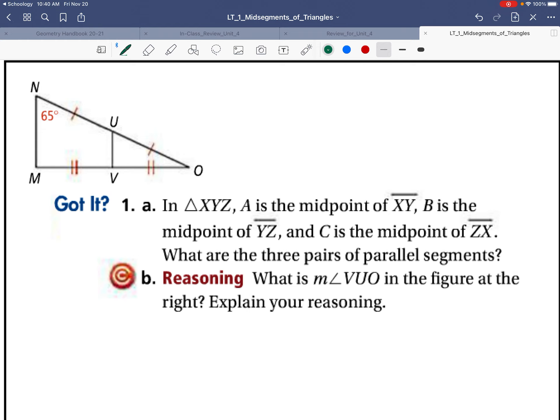In triangle XYZ, A is the midpoint of XY, B is the midpoint of YZ, C is the midpoint of ZX. What are the three pairs of parallel segments? Well, this diagram you see up here does not go for problem 1A, so I'm going to cross that out. We did one similar to that, so you'll be fine with it.